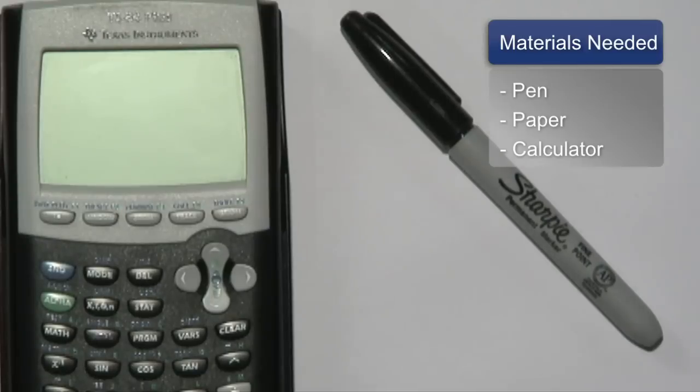What you need for this exercise are a pen or pencil, piece of paper, and a calculator, whether it be a scientific one or a graphing calculator. So we're going to go over a few examples right now.